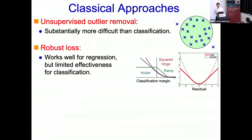People may want to use robust loss functions from robust statistics, and this works quite well for regression. Instead of least squares, we may use the Huber loss, so the effect of outliers is suppressed. We can extend that idea to classification — instead of the squared hinge loss, we may use the Huber classification loss or even the ramp loss, which is an upper-bounded loss. In practice we can obtain a somewhat robust solution from these functions.